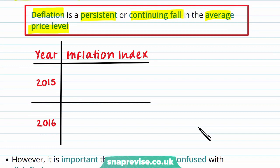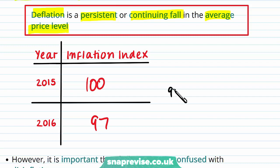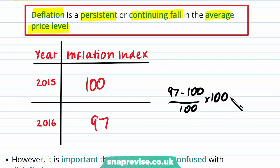Negative inflation is known as deflation — a persistent or continuing fall in the average price level. Suppose in 2015 the inflation index is 100 and in 2016 it is 97, with 2015 as the base year. To calculate the inflation rate: (97 − 100) / 100 × 100 = minus 3%. This minus 3% is classified as deflation.